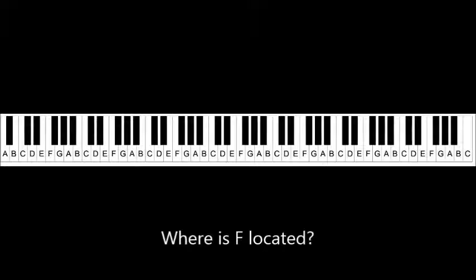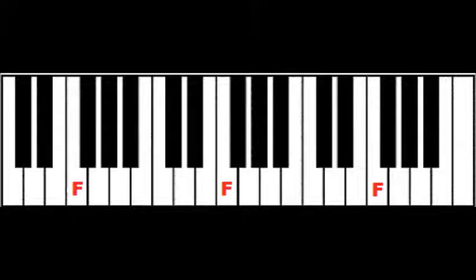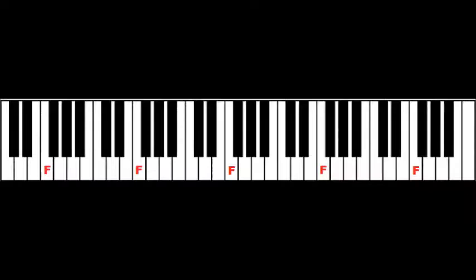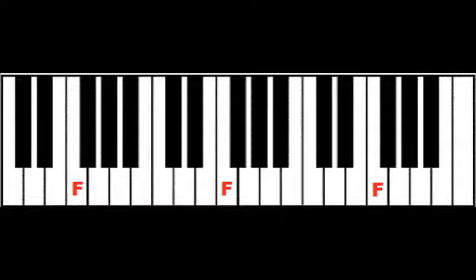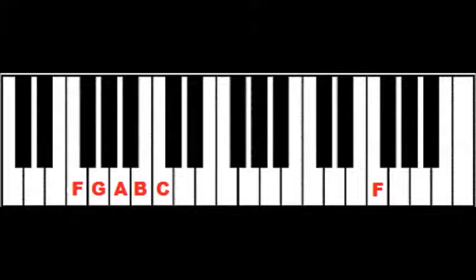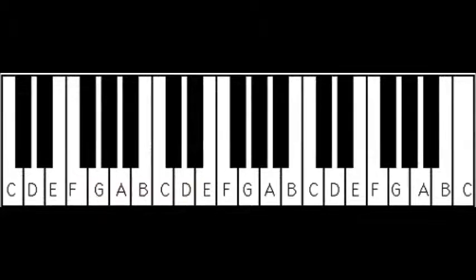F is located before a set of three black keys. This diagram shows various F notes on your piano keyboard. As we said earlier, the note after F is G, then A, B, C, D, E, F — and it continues.